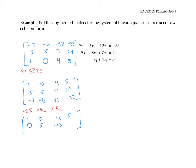So negative five times the first row plus the second row goes to where the second row is. The first row I'll just copy over. In the second row: negative five plus five is zero; negative five times zero plus five is five; negative five times four plus seven is negative 20 plus seven, so that's negative 13; and negative five times five plus 24 is negative 25 plus 24, so that's negative one. I can also get a zero in this position if I take seven times the first row and add it to the third row. That gives me zero, negative six, six; seven times four is 28 minus 12 is 16; and seven times five is 35 minus 33 is two.